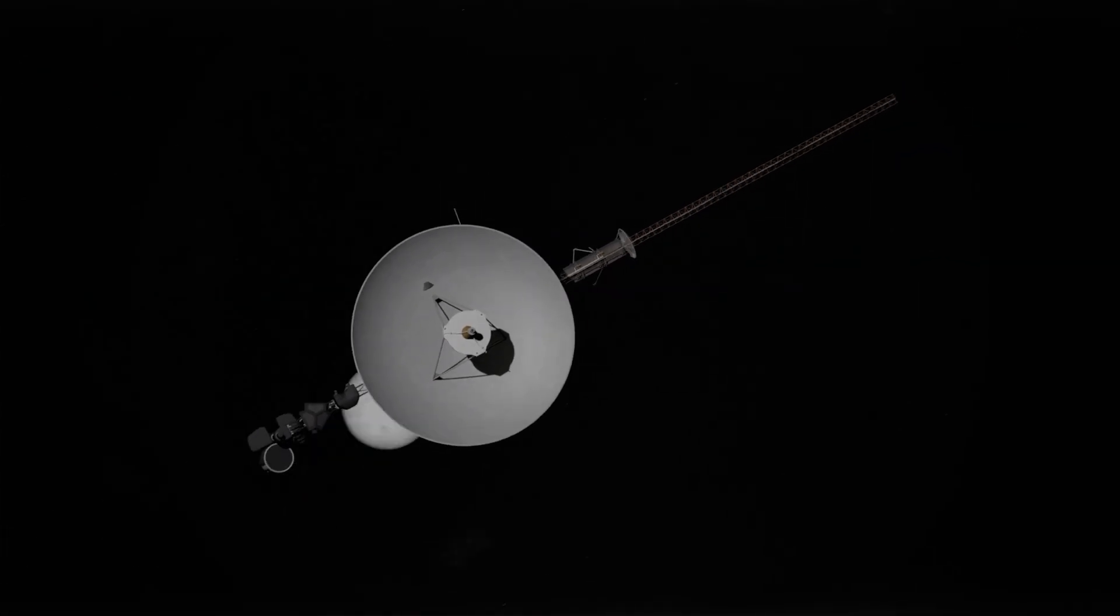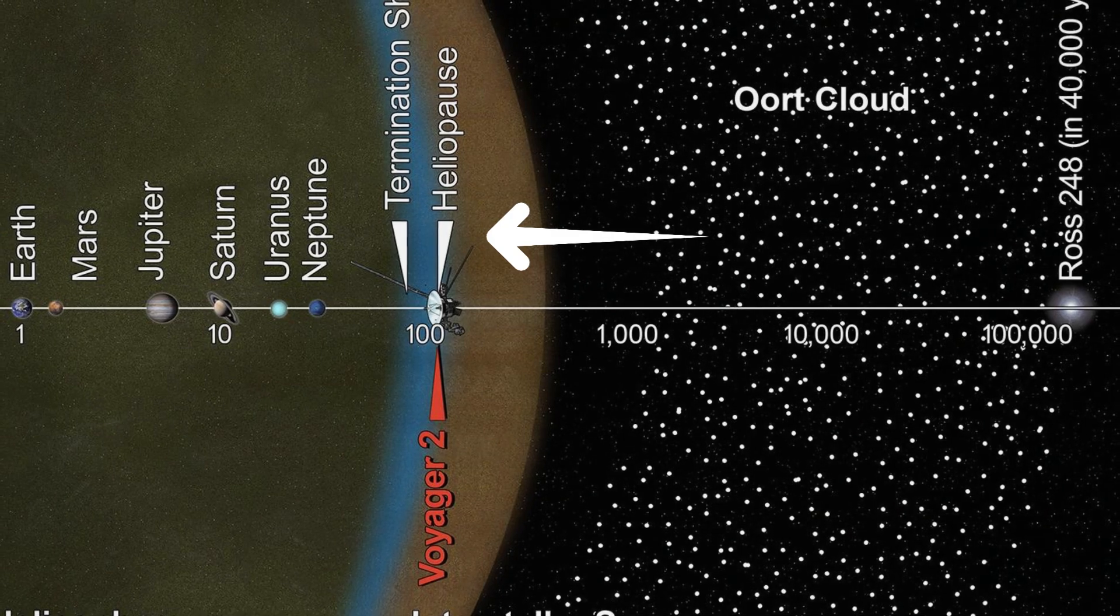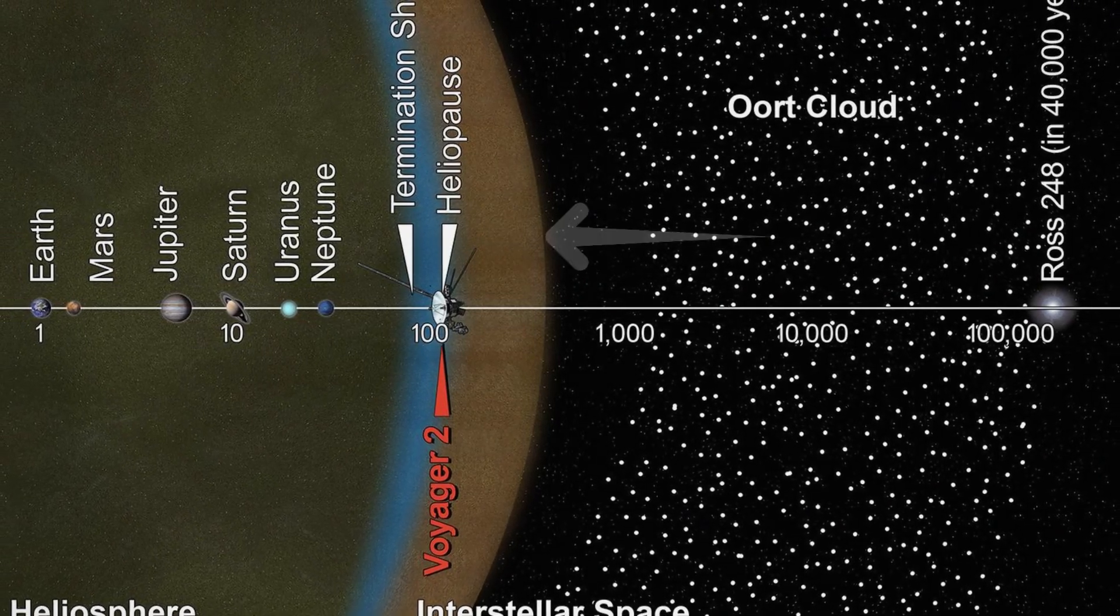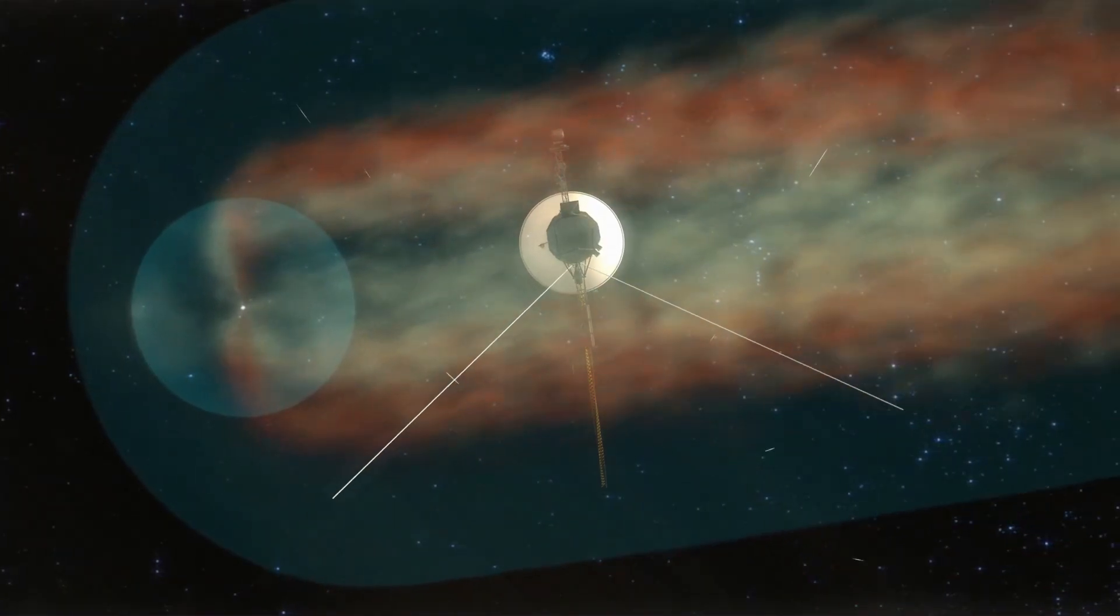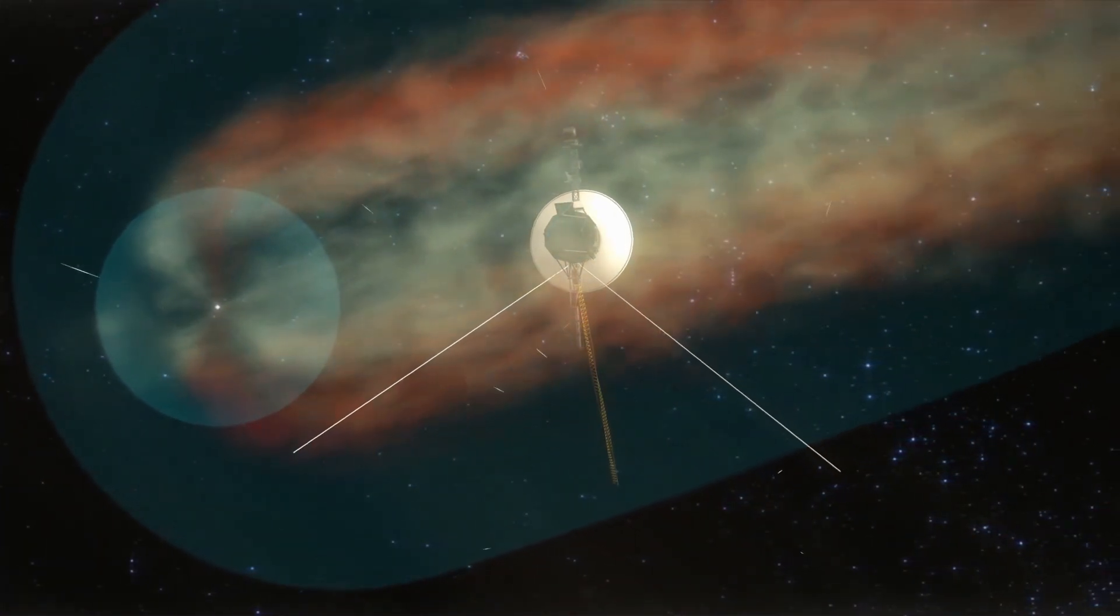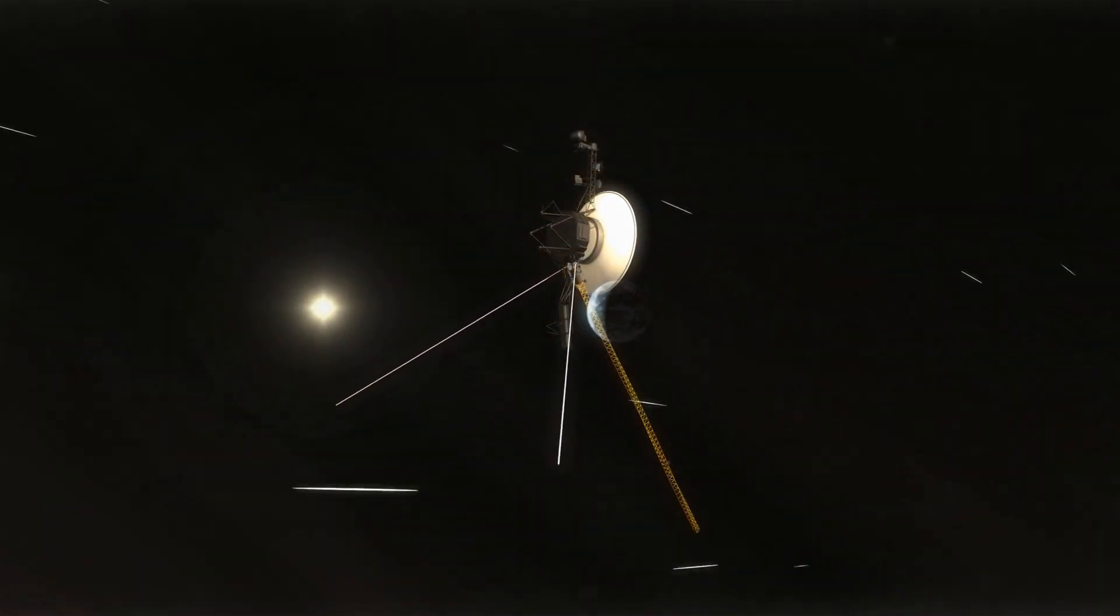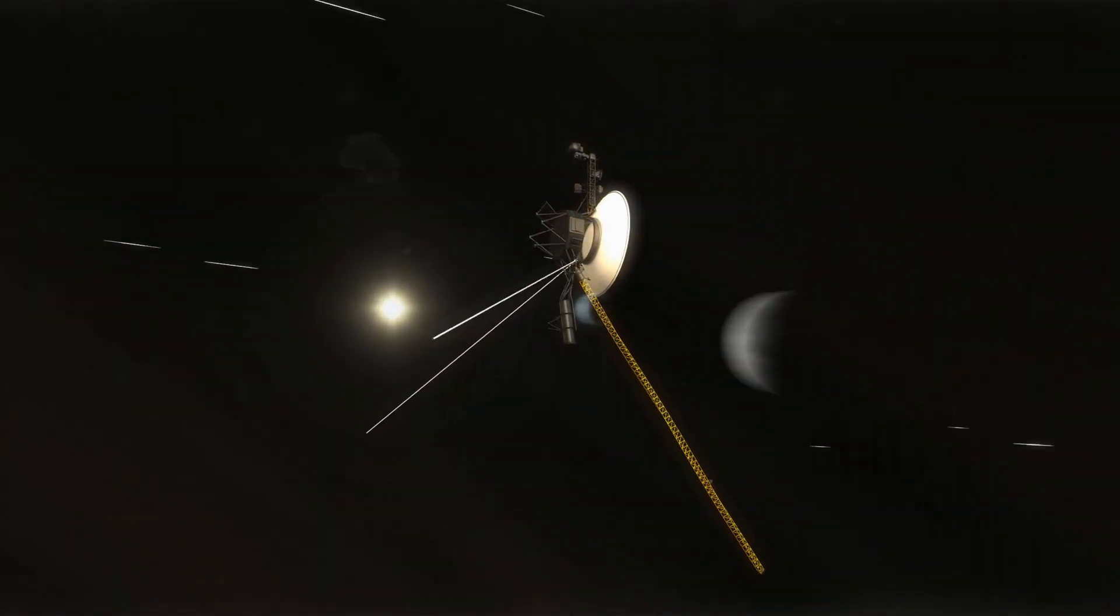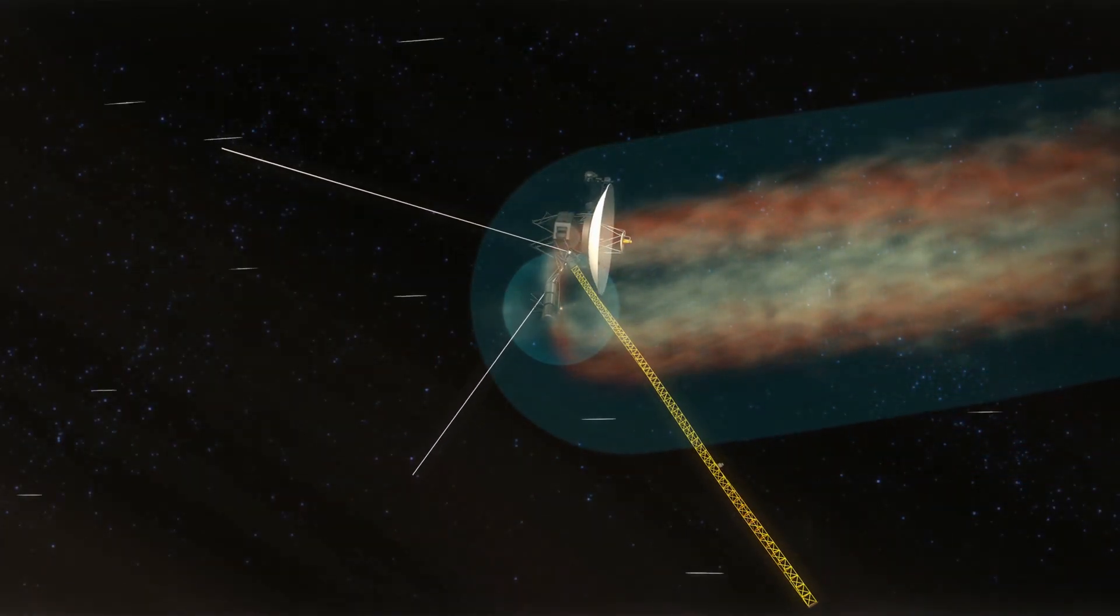In 2018, Voyager 2 reached the heliopause, a region enveloping our solar system entirely. Here, the probe encountered evidence of an interstellar plasma wall, resembling a fiery shield forged from solar wind. Despite its formidable appearance, this plasmasphere is relatively sparse, allowing Voyager 2 to penetrate it effortlessly.